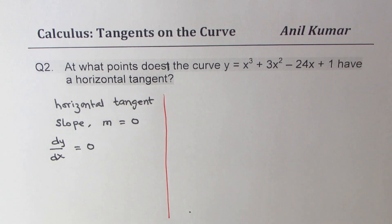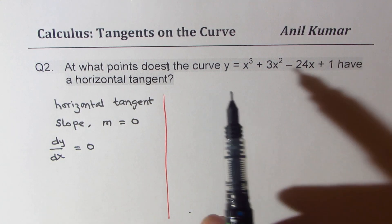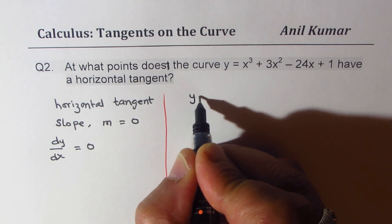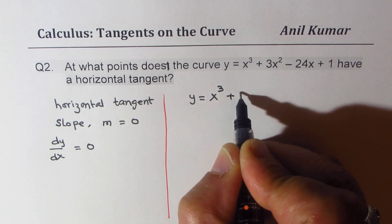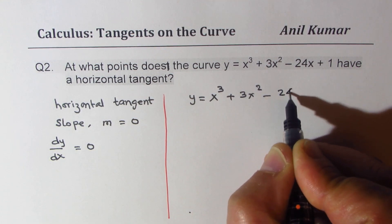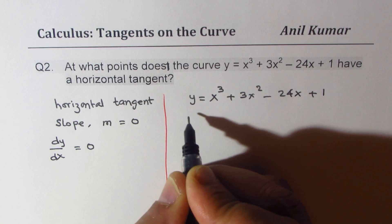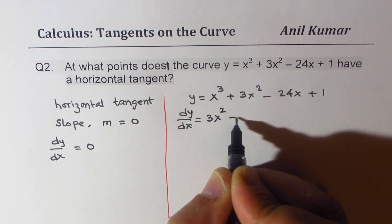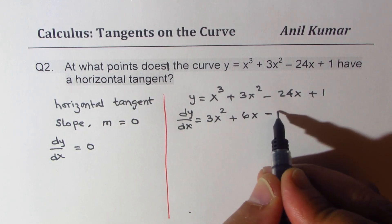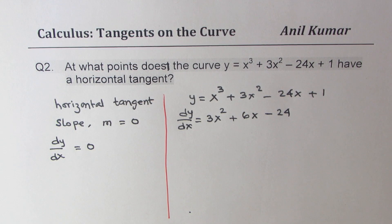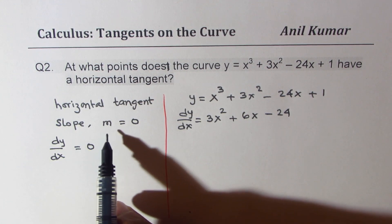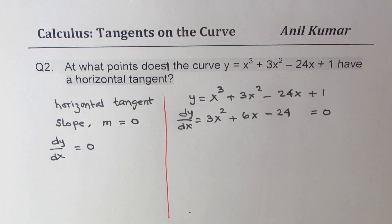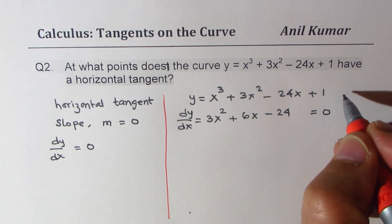Let's find the derivative and equate it to 0 to find the points. So we have y equals to x cubed plus 3x squared minus 24x plus 1, and dy/dx equals to 3x squared plus 6x minus 24. Just application of power rule. Setting the slope equal to 0, we equate this to 0 and find what x is — that's the whole idea for a horizontal tangent.